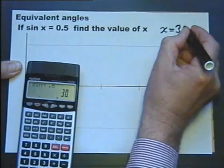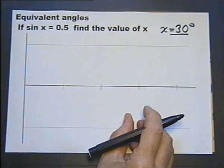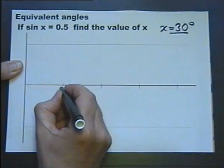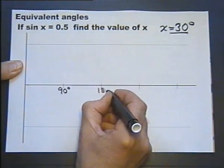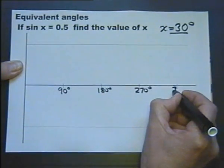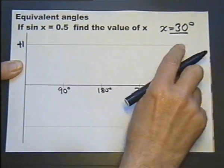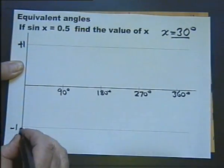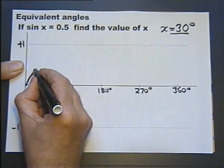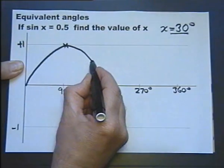So the answer is x equals 30 degrees, but is that the only answer? For that we need to look at the graph. If that's 90 degrees, 180 degrees, 270 degrees, and 360 degrees, going up to plus 1 and down to minus 1, we should be able to sketch the sine graph. That goes up to there and comes down to there.